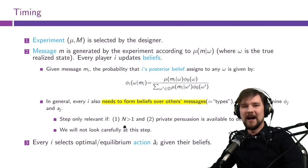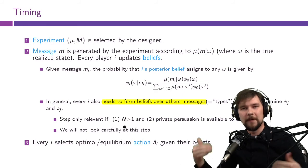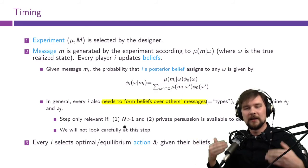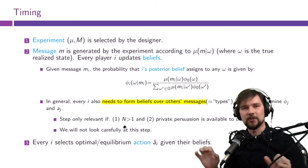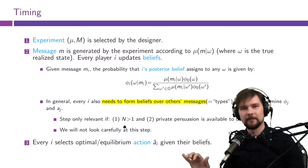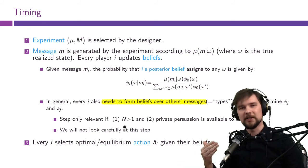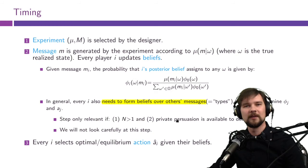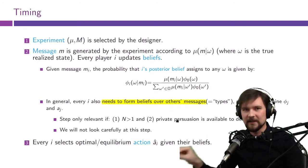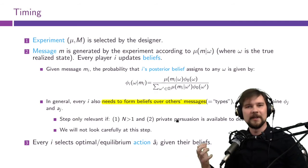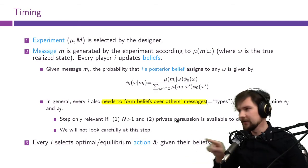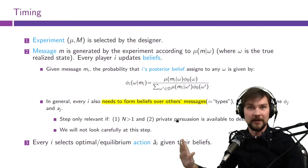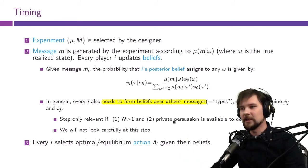This step is also unnecessary if the designer is constrained to public persuasion — meaning the designer must send the same message to all players. In that case, if I receive a message I know everyone else got the same message. The opposite case is private persuasion, where every player receives a private personalized message. If you have many players and private persuasion is possible, you must keep track of this additional belief step.